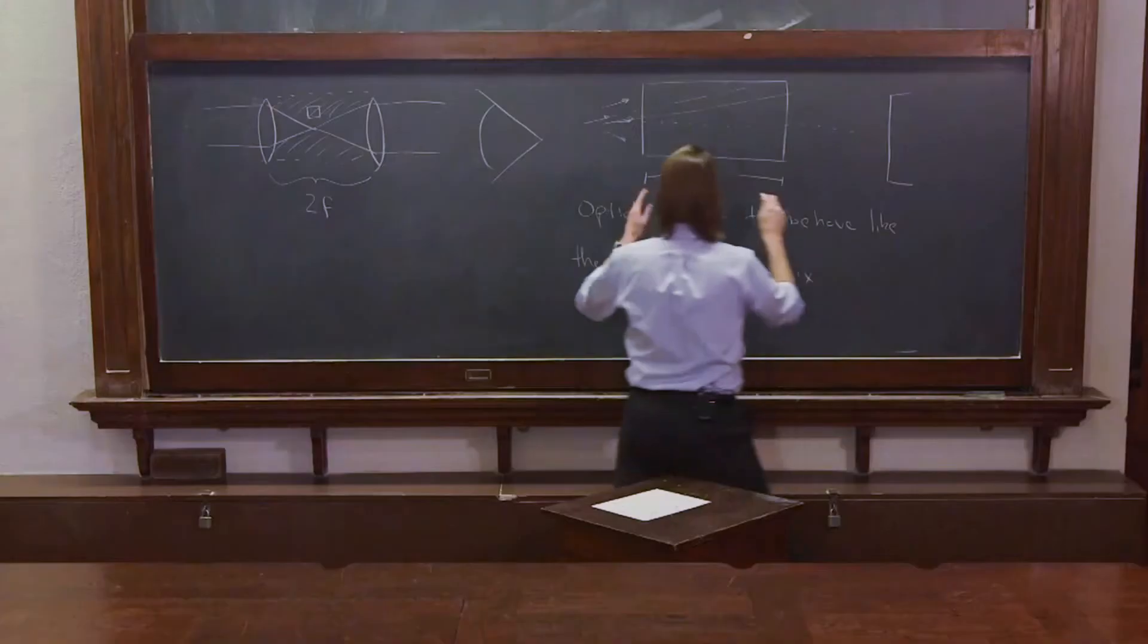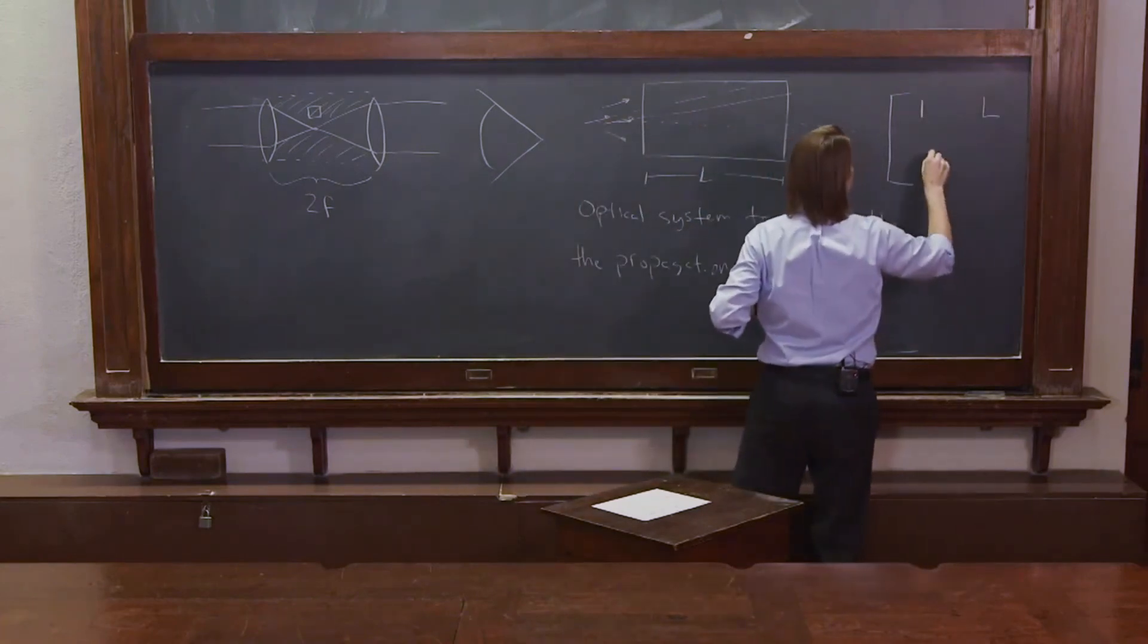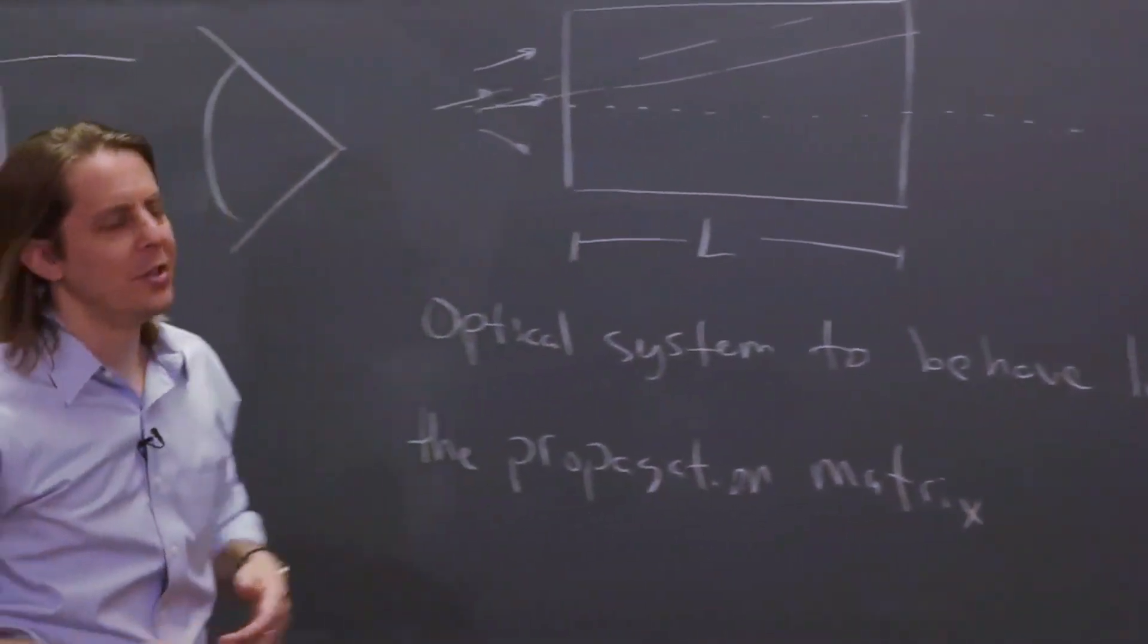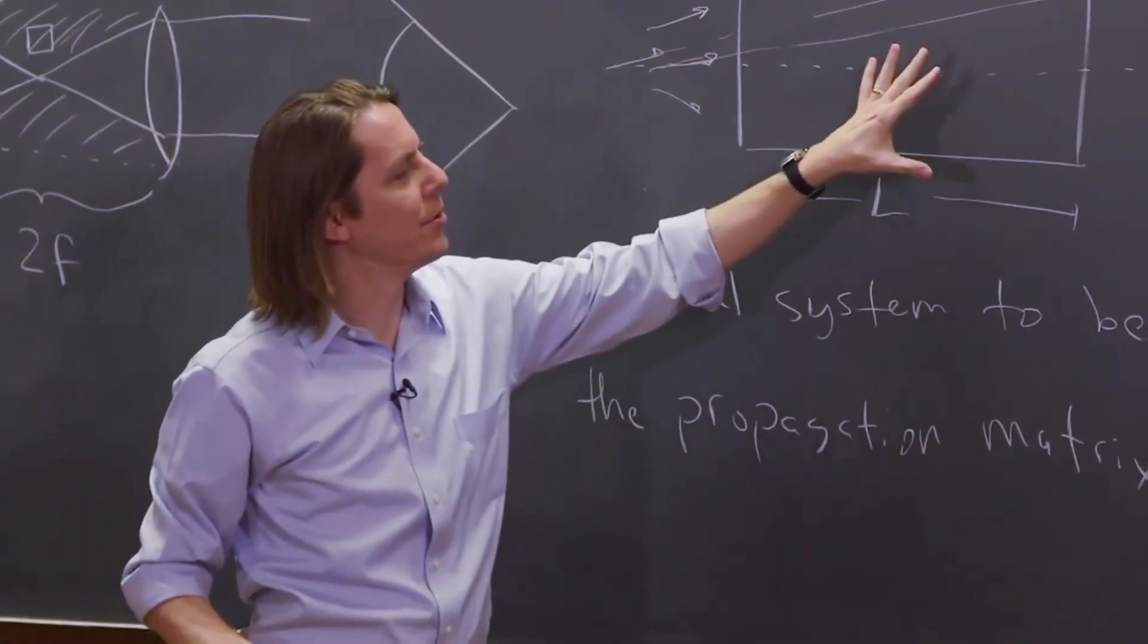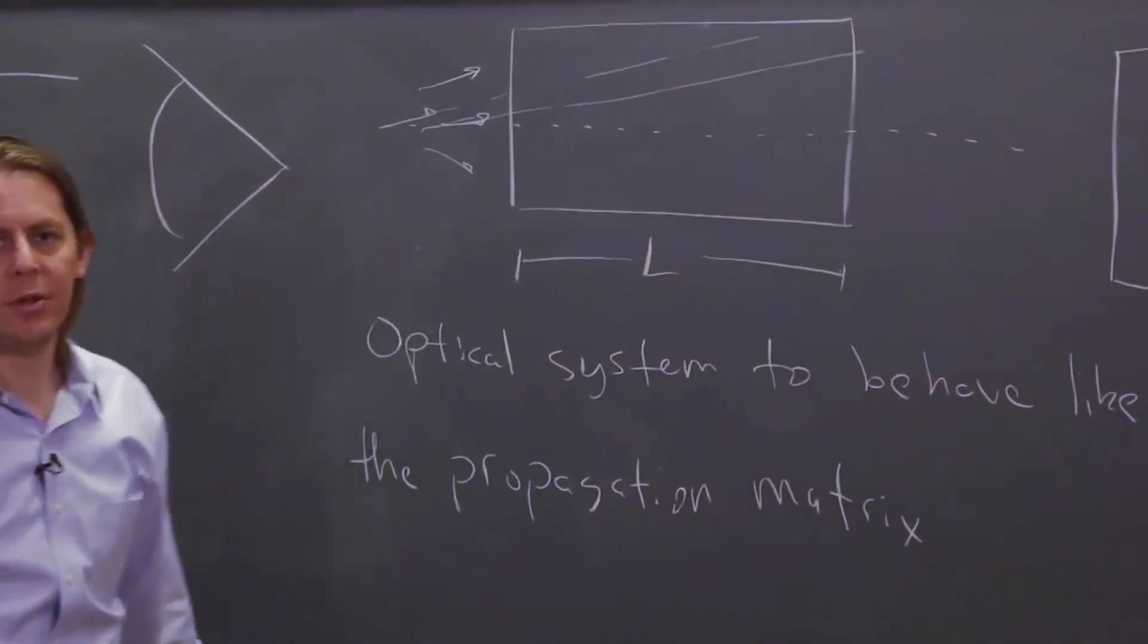If we want the ray to move a distance l and keep its original path, that's just the matrix [[1, l], [0, 1]]. So the question is: what lenses do you put in here to make the product of all their matrices be [[1, l], [0, 1]]?